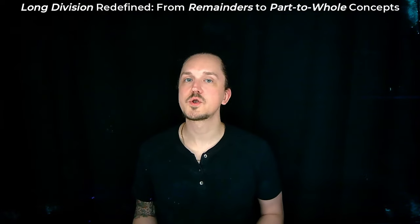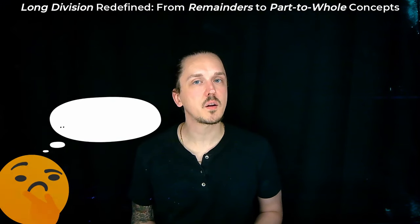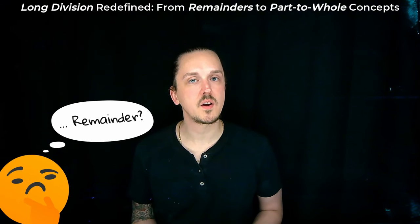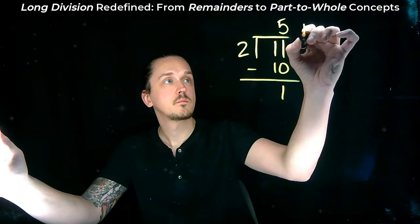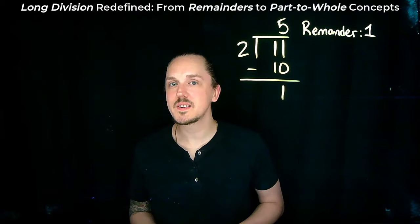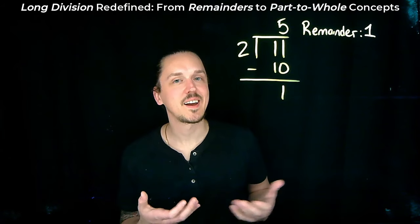Now traditionally, when we divided numbers using long division, we sometimes talked about having something called a remainder left over. For example, if you divided 11 by 2, you'd get 5 with a remainder of 1. But let's look at this through the lens of modern mathematics and the common core approach.